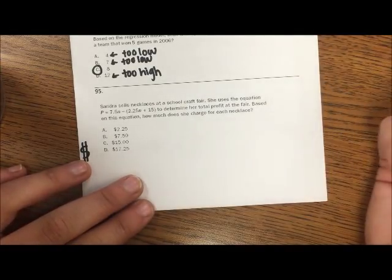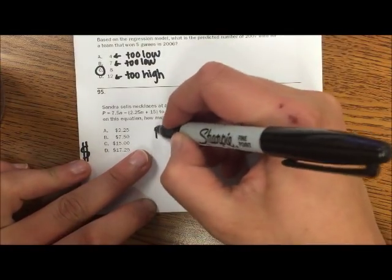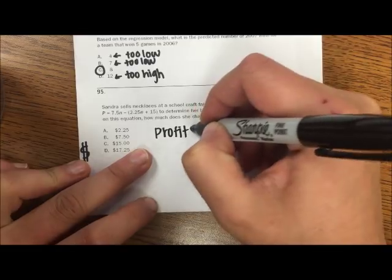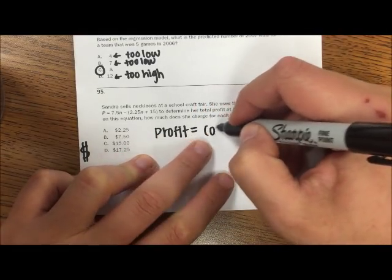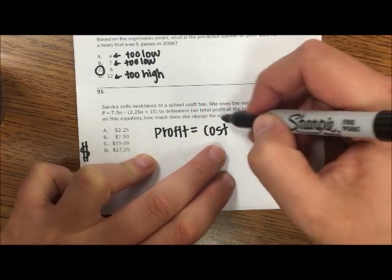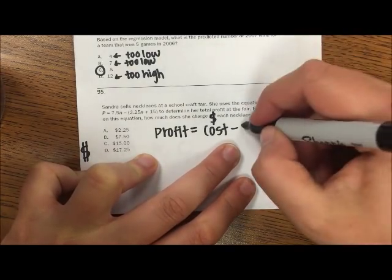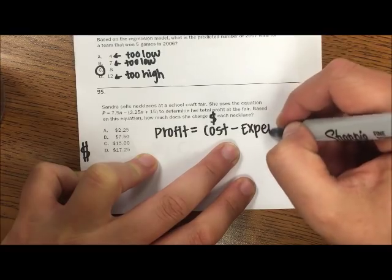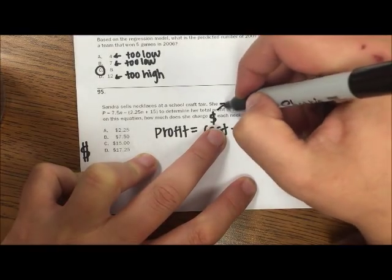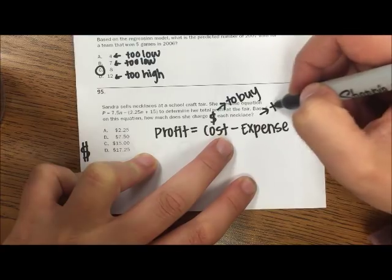Alright, so to find a profit, you're doing how much the necklace costs to buy it minus how much it costs to make it. And we call that the expense. So to buy and to make.